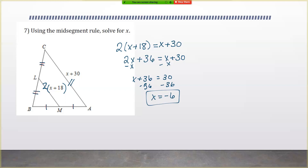You can always plug this back in to check your answer. Plugging into the mid-segment: negative 6 plus 18 gives a mid-segment of 12 units long. Plugging into the outer side: negative 6 plus 30 is 24 units long. And they are exactly what they should be — 2 times 12 gives 24, which is exactly what I got.